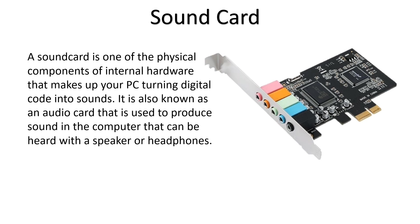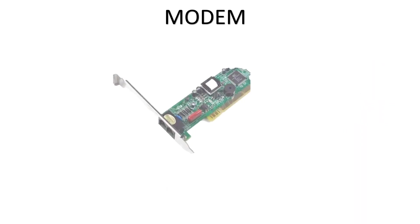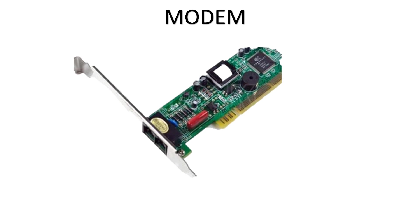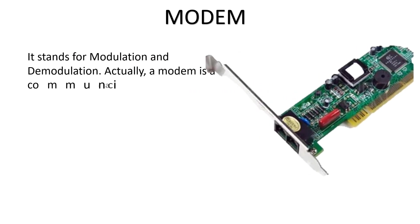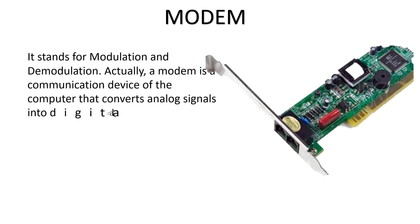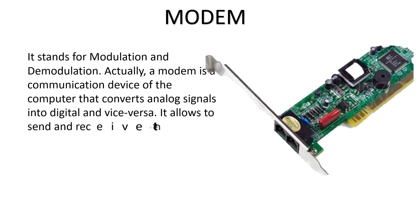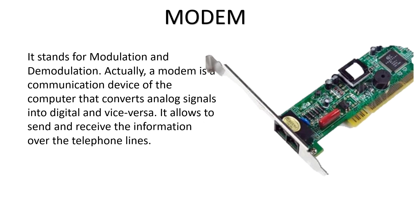Another important device is the modem, which stands for modulator and demodulator. A modem is the communication device of the computer that converts analog signals into digital signals and digital signals into analog signals. It is attached to the motherboard and allows us to send and receive information over the telephone line.